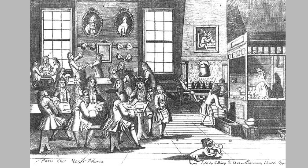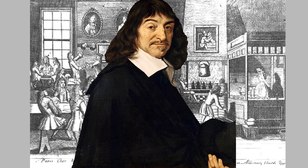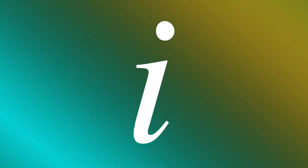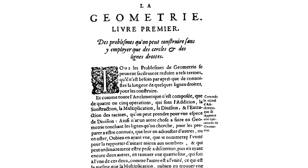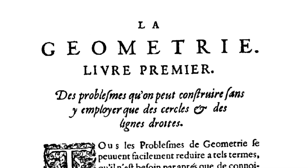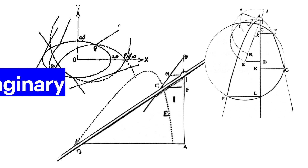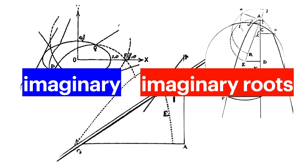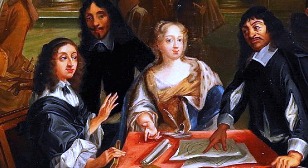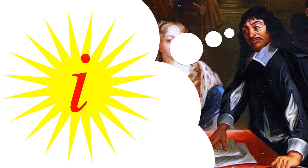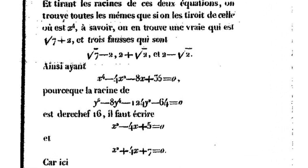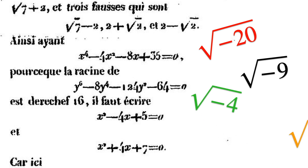Later in the 17th century, the concept of imaginary numbers was further developed and formalized. René Descartes made significant contributions to the development of algebra and the understanding of mathematical concepts, including his work on what we now call imaginary numbers. In his work La Géométrie, Descartes encountered solutions to cubic equations that involved square roots of negative numbers. These solutions did not have clear geometric interpretations in the real world, and Descartes referred to these quantities as imaginary roots to distinguish them from real numbers. While he didn't fully embrace the concept of imaginary numbers, his willingness to explore these solutions was an important step in the eventual acceptance of complex numbers.